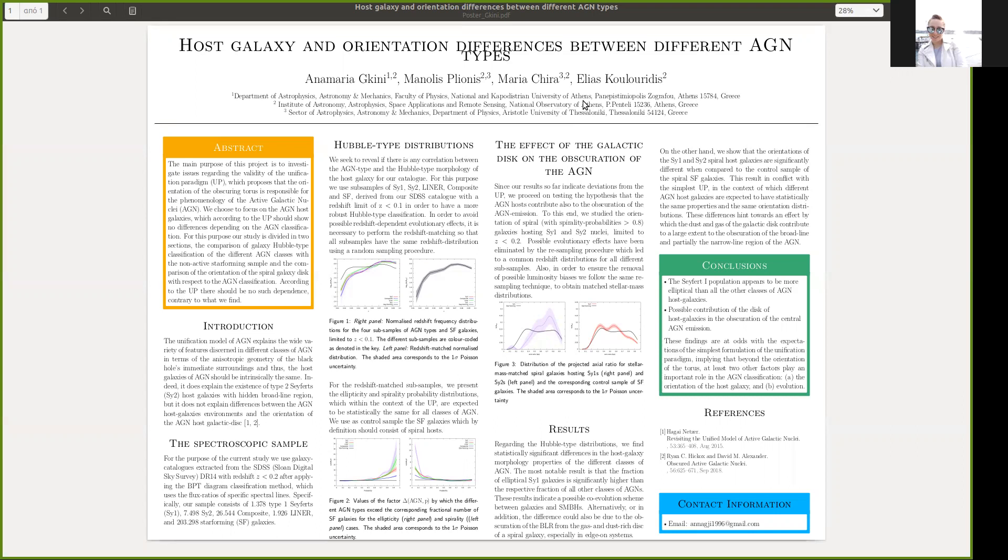Regarding the difference in the distributions of Seyfert-2 and star-forming galaxies at low b over a values, a possible explanation could be that in more edge-on orientations, the dust and the gas of the disk can be sufficient to obscure both the broad line and the narrow line region.